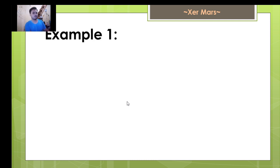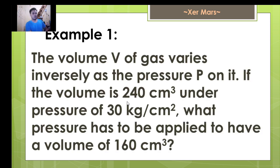Example number 1. The volume V of gas varies inversely as the pressure P on it. If the volume is 240 cubic centimeter under pressure of 30 kilogram per square centimeter, what pressure has to be applied to have a volume of 160 cubic centimeter. As you can see in our problem, we have two quantities involved.